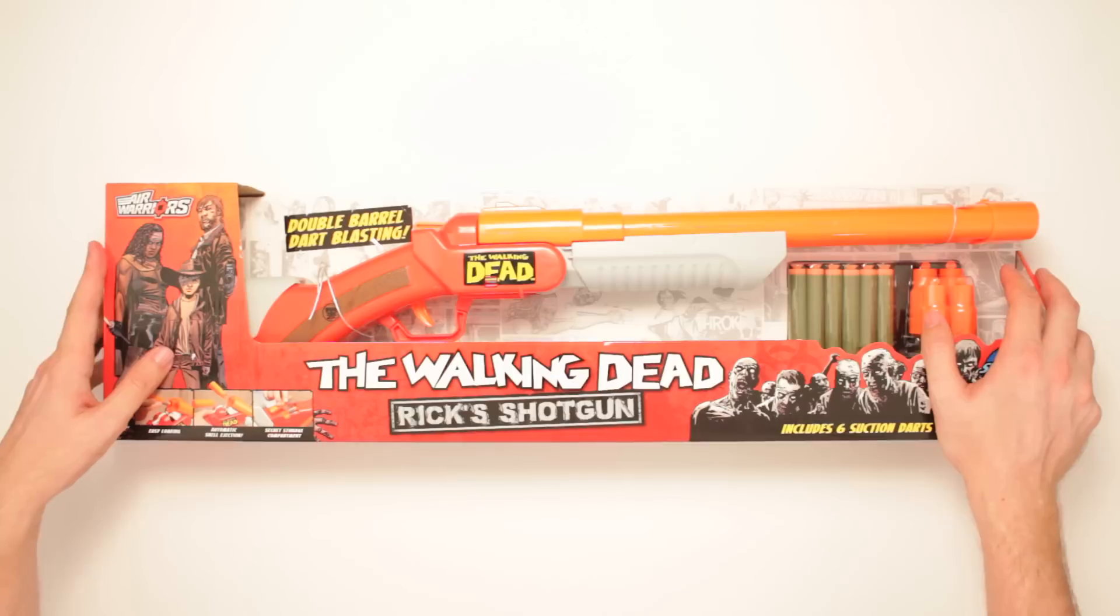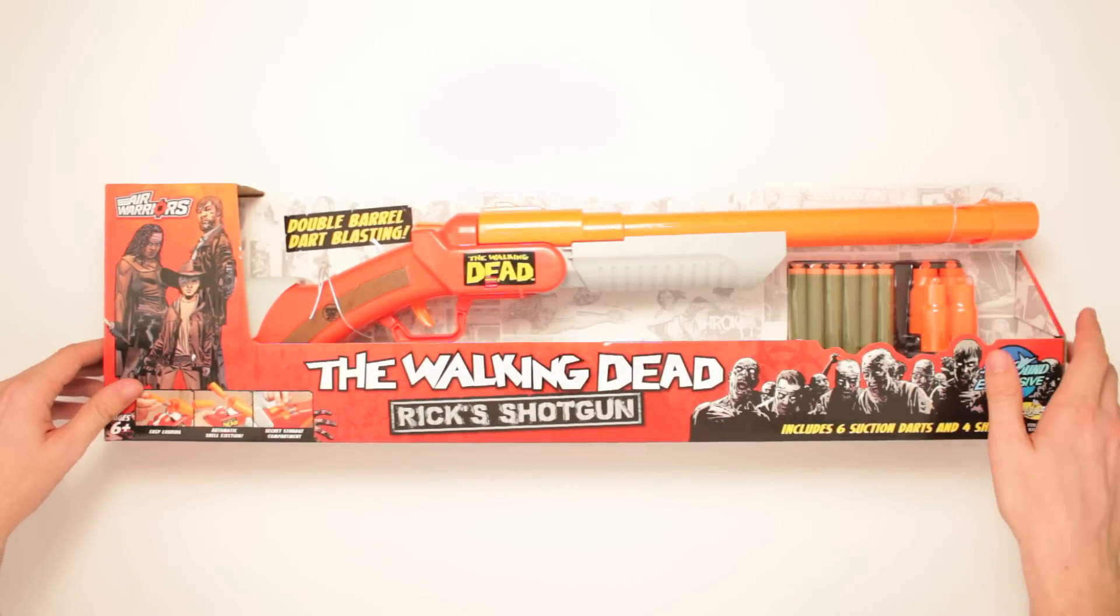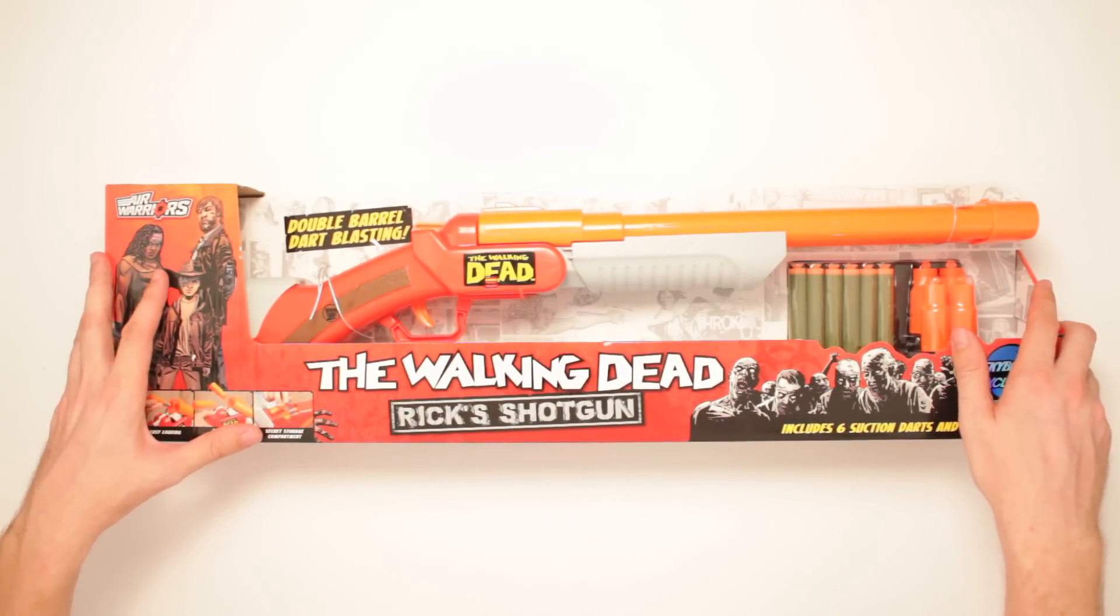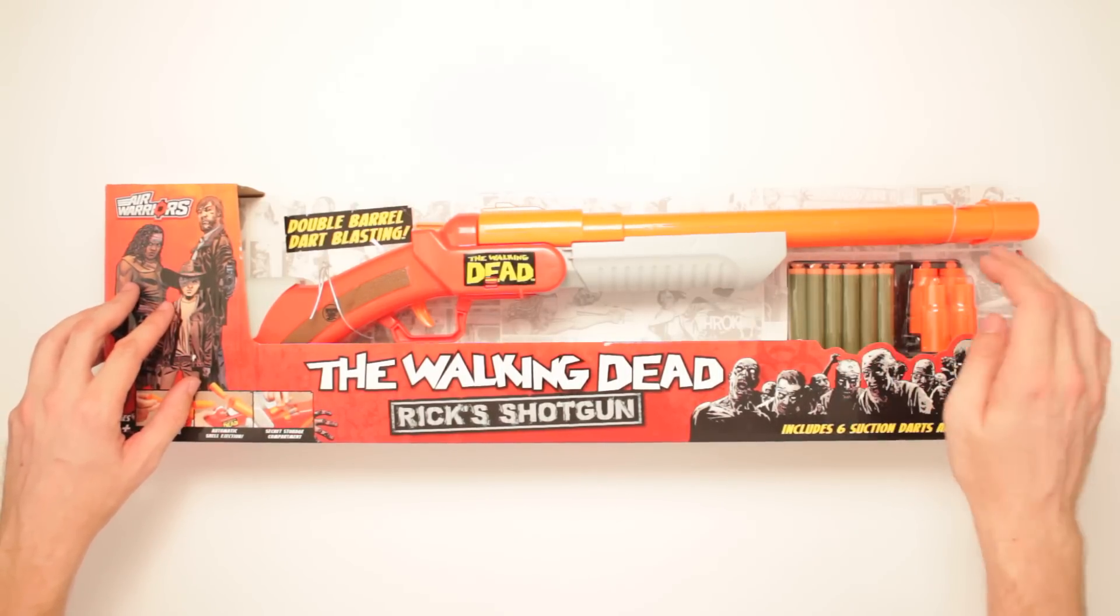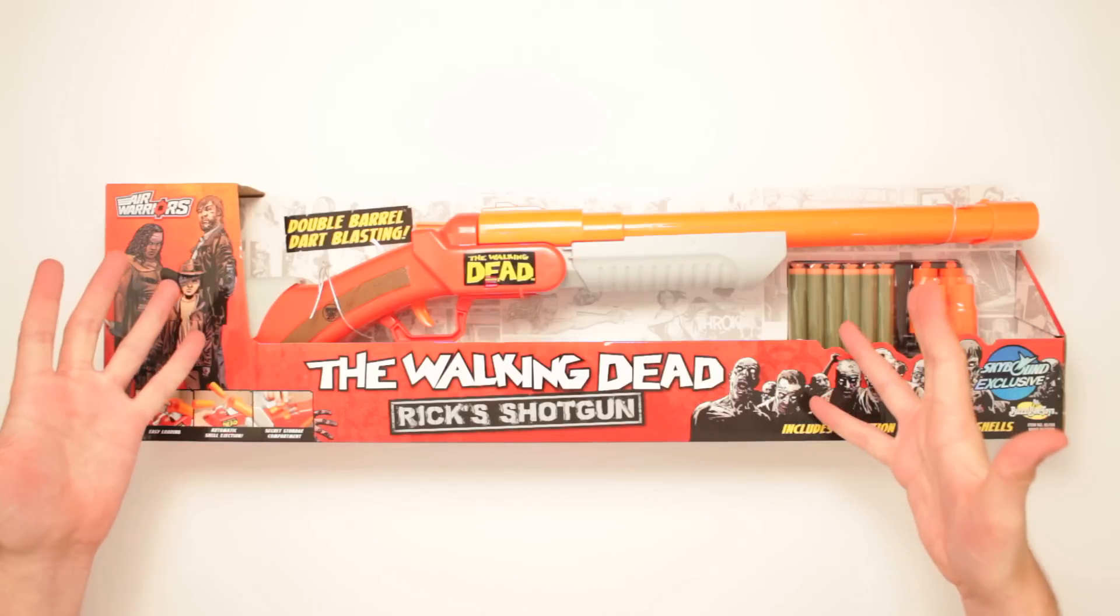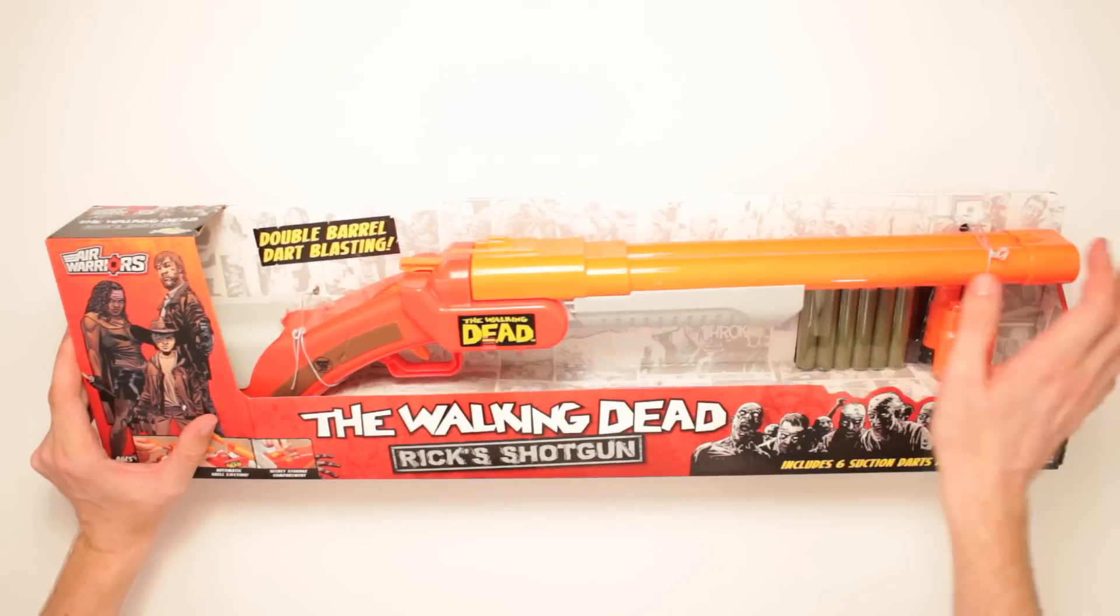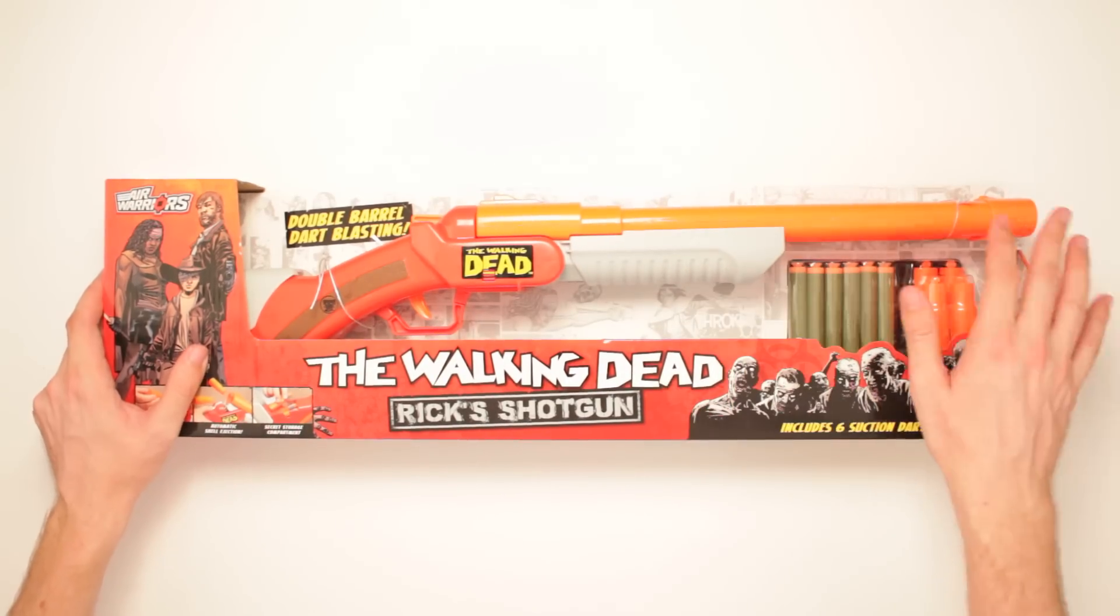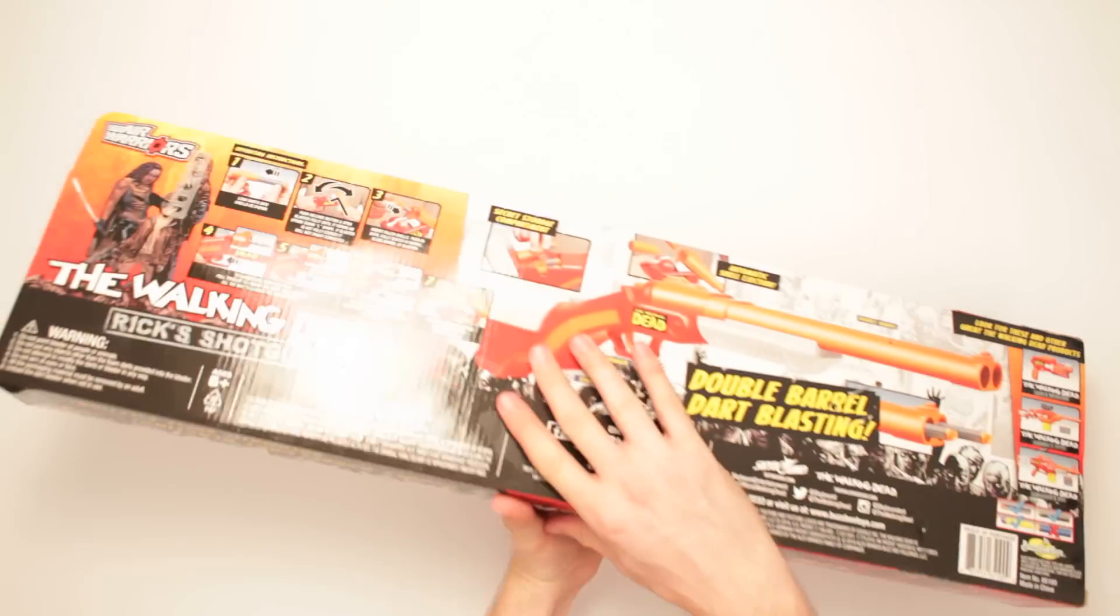Carl! Easy loadin', automatic shell injection, oh that's pretty cool. And secret storage compartment, this one seems very different than the other ones, cause it's darts within a shell casing to treat it like a real shotgun, so that's pretty dang exciting! Double Barrel Dart Blastin'! And it looks really cool. So we see all that there, and then let's flip it over on the back, right meow!